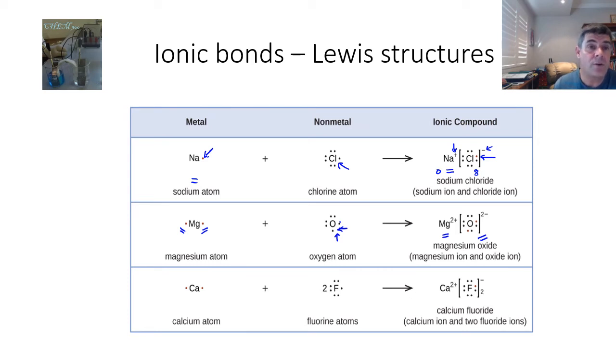We can continue to work through this for different types of examples. The only reason I've added the calcium one at the bottom is that you can see calcium has two outer shell electrons and fluorine only has one space. Therefore, if calcium is going to bond with fluorine, it needs two fluorine atoms to take up these two electrons. That gives us a formula of CaF2.